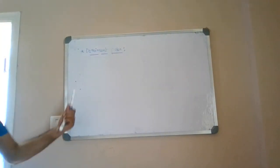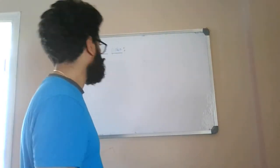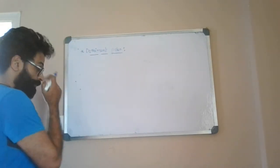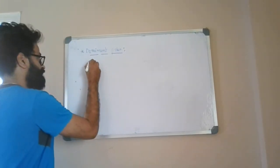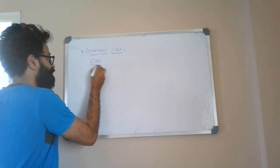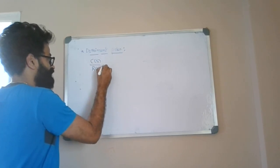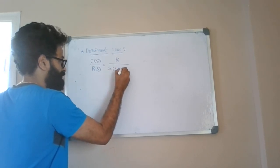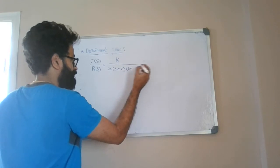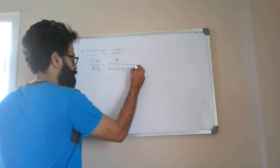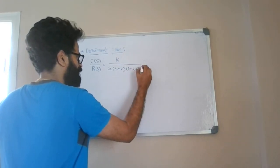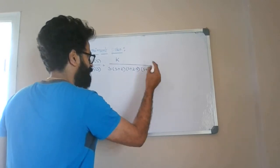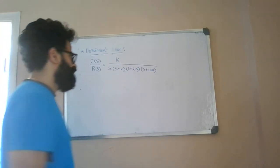Next we have a concept called dominant force. To understand it, let us consider a sample transfer function: C(s)/R(s) equal to K divided by s times (s+2)(s+2.5)(s+100).